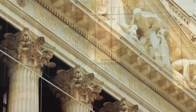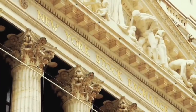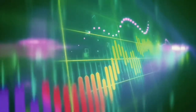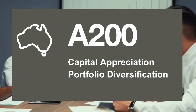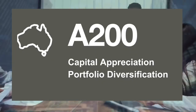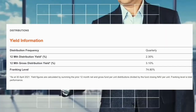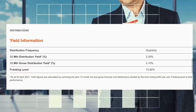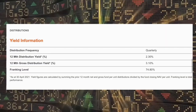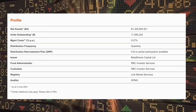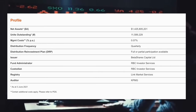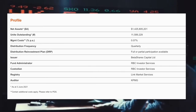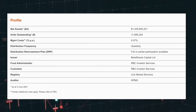Stick around to the end of the video where we'll see how good the returns and performance of A200 have been over time. To find the ETF in your brokerage account, you will need to type in the ticker code A200 to bring up the options to buy or sell shares in the fund. It pays distributions which are dividends from the ETF four times a year with a yield of 2.3% and has a management expense ratio of 0.07% per year. So for every $10,000 invested, it will cost $7 per year in fees.